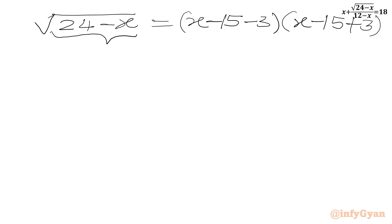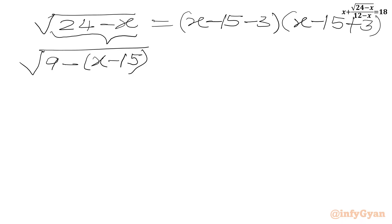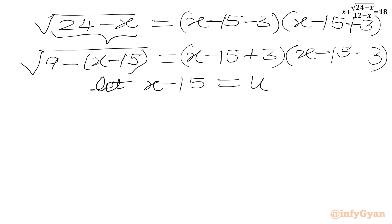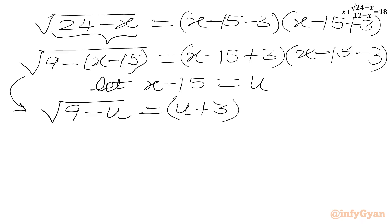Now we rewrite the LHS: 24 minus x = 9 minus (x minus 15), since 9 + 15 = 24. So the equation becomes: square root(9 minus (x minus 15)) = (x minus 15 plus 3)(x minus 15 minus 3). We now apply the substitution: let u = x minus 15. The equation in u is: square root(9 minus u) = (u plus 3)(u minus 3).